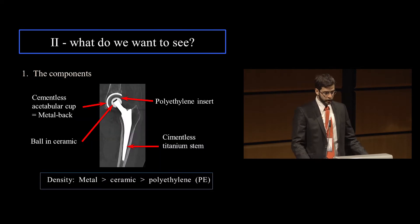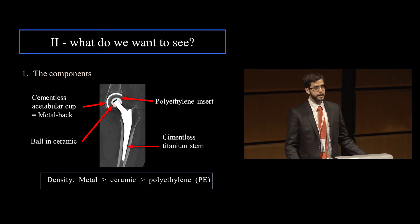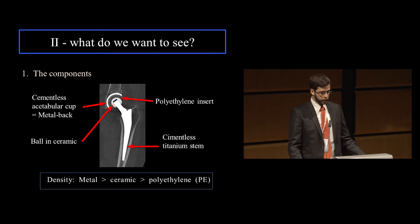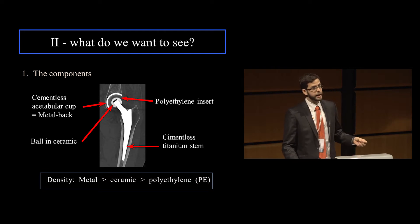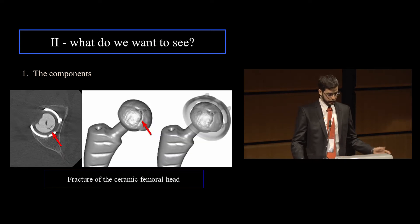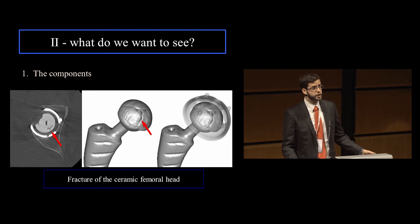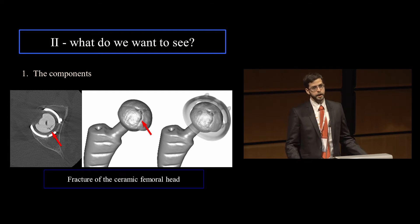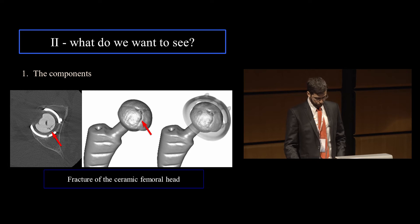What do radiologists want to see? First, the metal components — the components of the prosthesis: the metal back, the bearing systems. In this case, a polyethylene insert and a ceramic ball, and then the stem of the prosthesis. Depending on the composition of each component, the density will vary. This is obviously important to evaluate because, for instance, there's a fracture of the ceramic ball, and you can imagine the patient will have a compromise in the function of this implant.